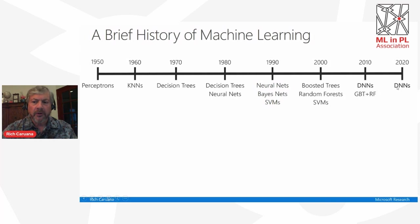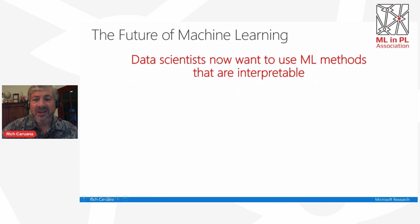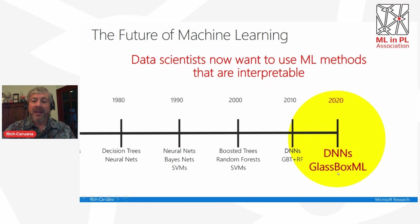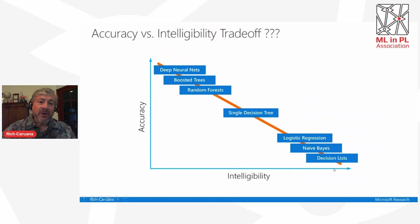Deep neural nets are going to be here for a long time, and some of my research is in deep learning. But the interesting question is: for tabular data, what's going to be the method of choice going forward? We're starting to see that data scientists want to use interpretable machine learning methods whenever they can. We suspect that these glass-box machine learning methods are going to become the method of choice for tabular data, while deep neural nets remain the method of choice for pixels and raw audio signals. One of the reasons is they're now as accurate as gradient-boosted trees and random forests.